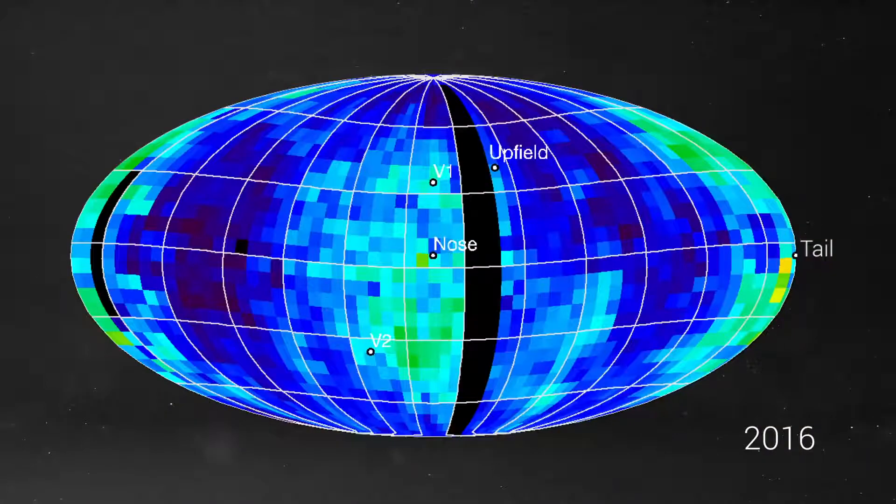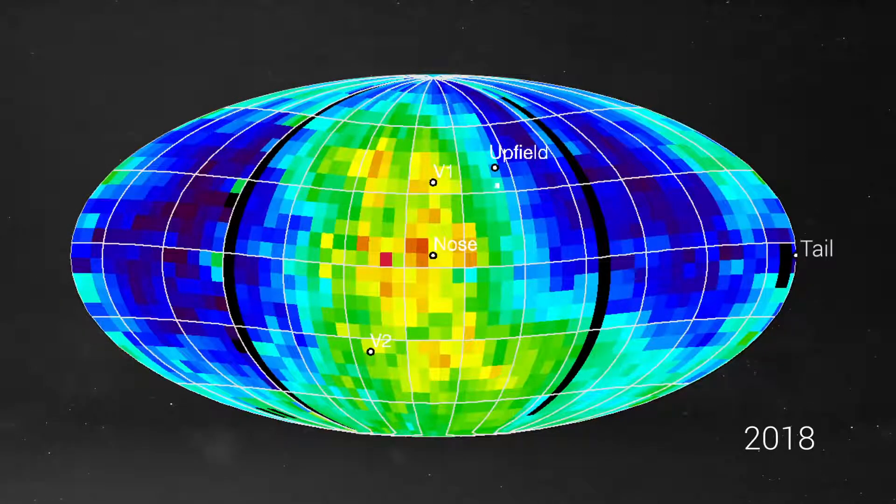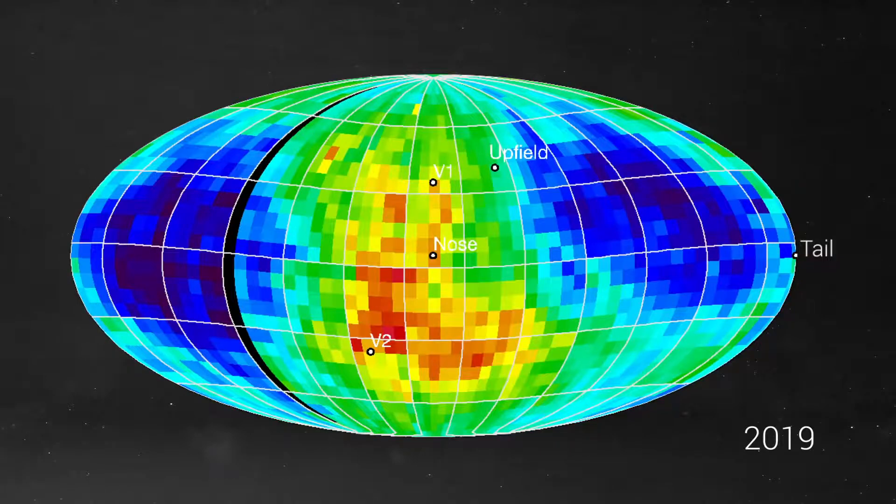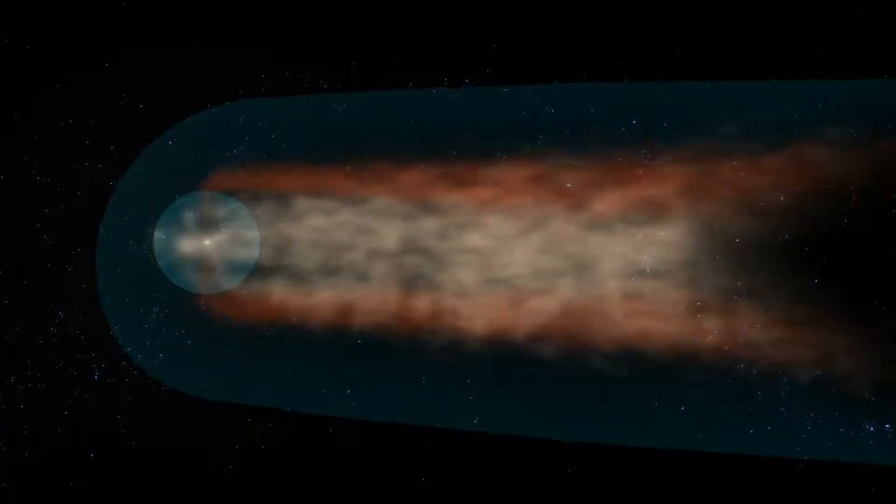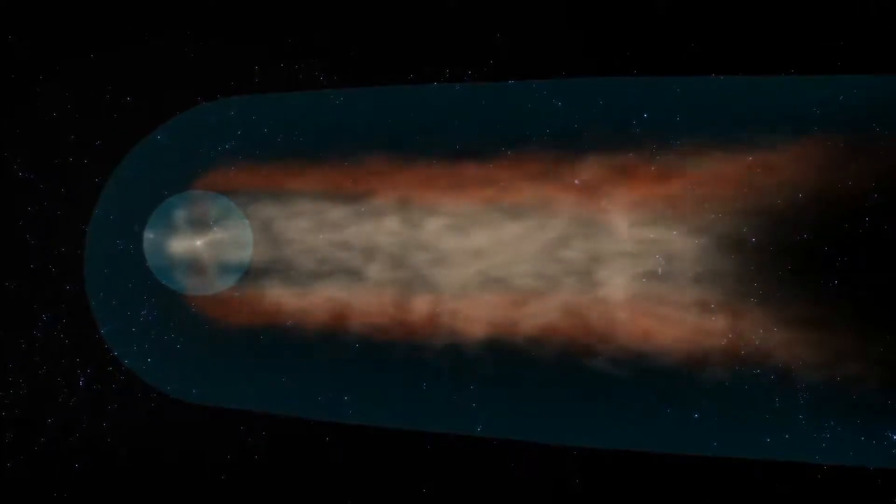If we compare the maps, ENAs from that big 2014 solar wind increase have returned from the nose, but they haven't returned from the tail yet, suggesting that the tail is much farther away from the sun than the nose. This indicates that the heliosphere looks more like a comet rather than a round bubble.